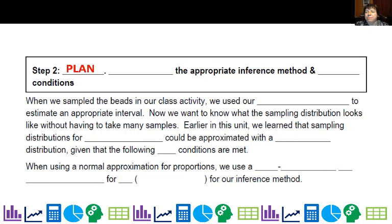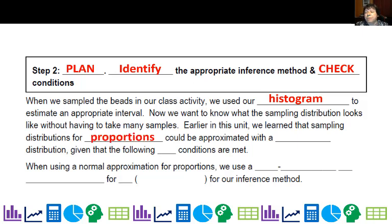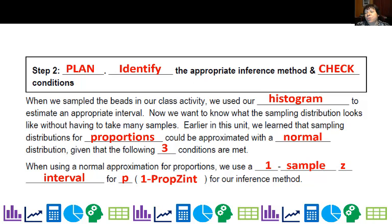Step two is to plan. That means we're going to identify the appropriate inference method — your very first one — and we're going to check conditions, and there could be some assumptions like in our joke. We want to know what the sampling distribution looks like without having to take a lot of samples. We're just taking the estimate from one sample, which in this case will be proportions. We're going to approximate it with the normal distribution given that the following three conditions are met. When using a normal approximation for proportions, we use a one-sample z-interval for P, the proportion. On your calculator that's called the one-prop z-int.